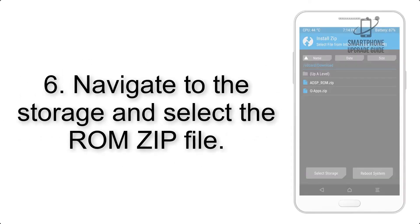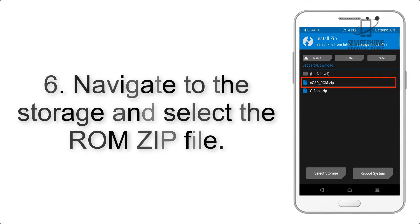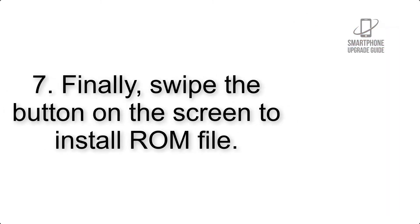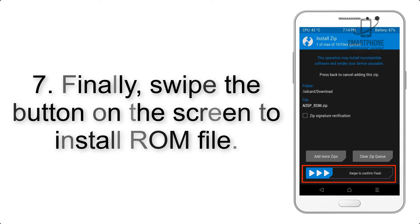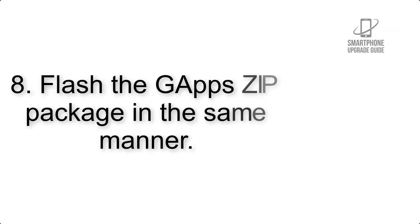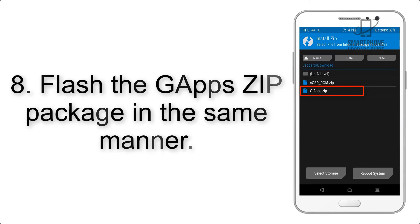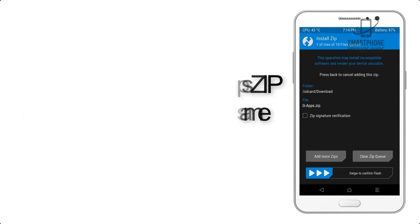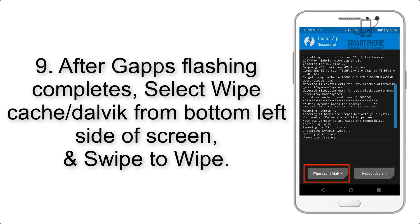Step 5: Go back to the recovery main screen and tap on the Install button. Step 6: Navigate to the storage and select the ROM zip file. Step 7: Swipe the button on the screen to install the ROM file.